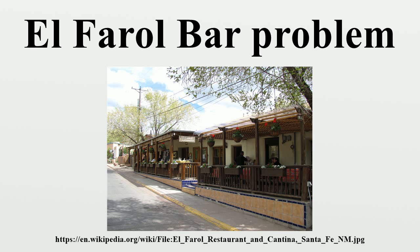The problem is as follows. There is a particular finite population of people. Every Thursday night, all of these people want to go to the El Farol bar. However, the El Farol is quite small, and it's no fun to go there if it's too crowded. If less than 60% of the population go to the bar, they'll all have a better time than if they stayed at home. If more than 60% go, they'll all have a worse time. It is necessary for everyone to decide at the same time whether they will go or not — they cannot wait and see how many others go on a particular Thursday before deciding.